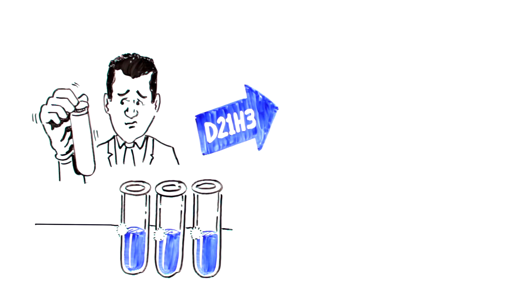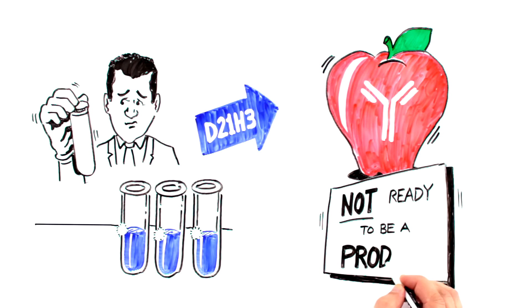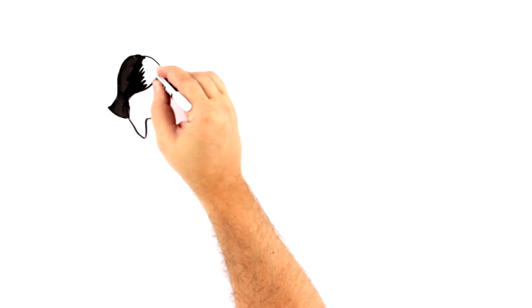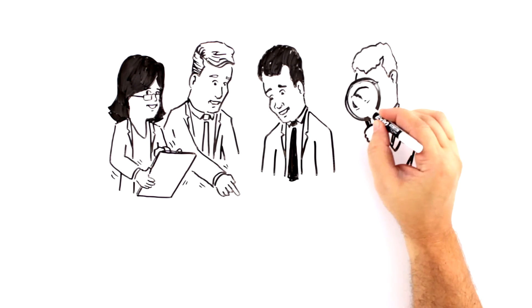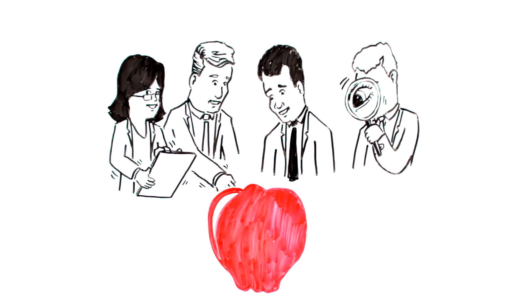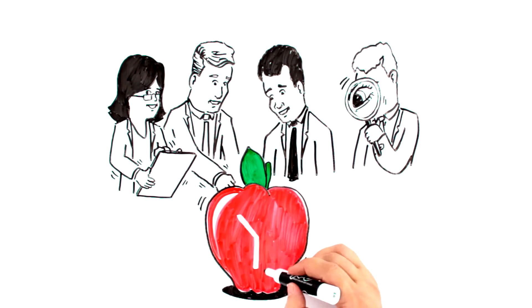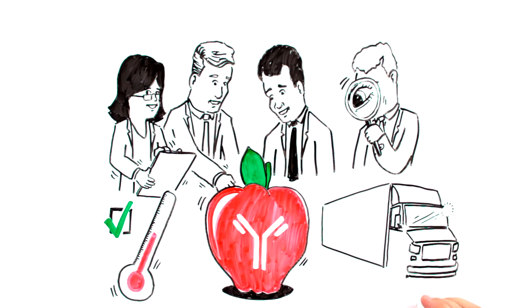But, this apple still wasn't quite ready to be a product. The development scientists passed the antibody over to the production group. Here, the production scientists provided a second check on the recommended antibody dilutions. They also checked the stability of the antibody to make sure that its quality was not affected by temperatures it would encounter during storage or shipping.